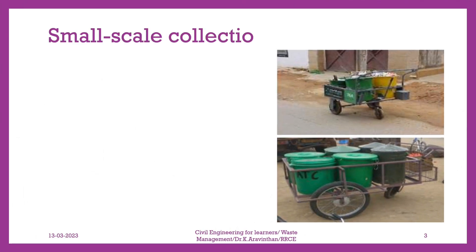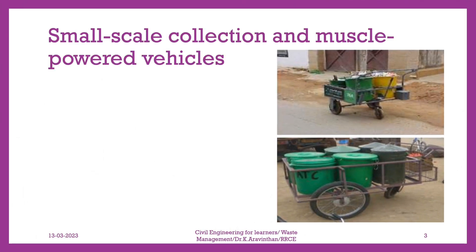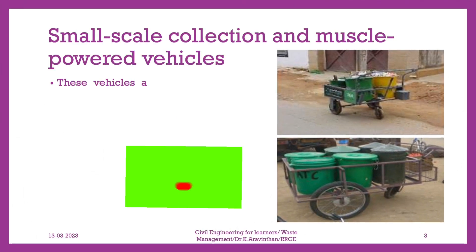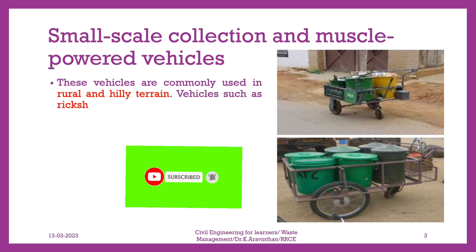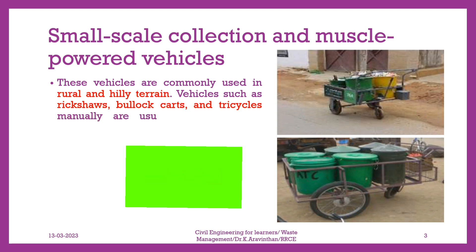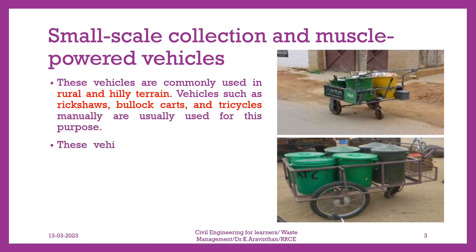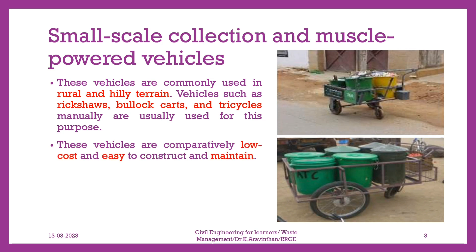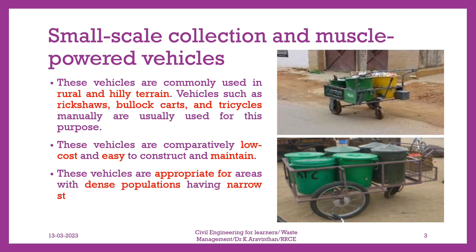Small-scale collection and muscle-powered vehicles. These vehicles are commonly used in rural and hilly terrain. Vehicles such as rickshaws, bullock carts, and tricycles are usually used for this purpose. These vehicles are comparatively low-cost and easy to construct and maintain. They are appropriate for areas with dense populations having narrow streets with comparatively less waste generation.